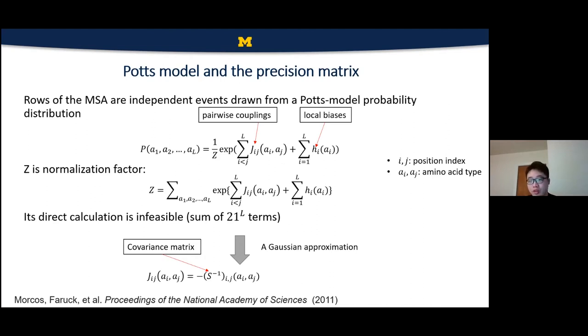So here Potts model is a probabilistic model. And each row of the multiple sequence alignment can be considered as one observation of the variable. And the Potts model have two terms. The first term is the pairwise coupling. And the second term is the local fields representing like two body and one body interactions. And later, some other methods also consider three body terms in the Hamiltonian. But actually, in this case, we believe that these two terms should be enough in this field. And here is the normalization factor to ensure that the summation of probability for all possible observations equals to one.